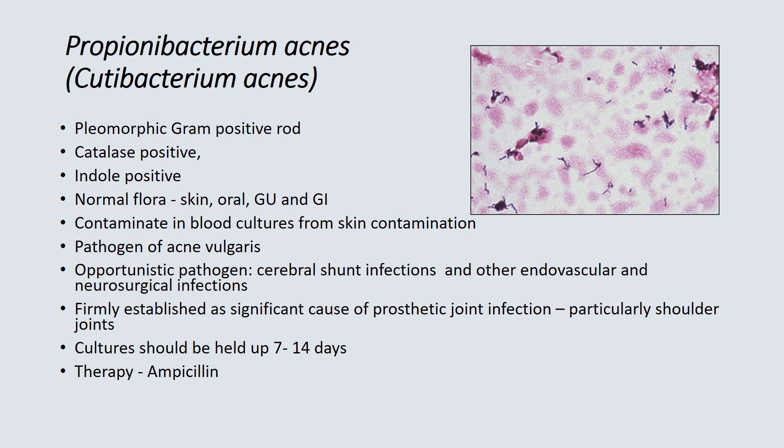Finally, Propionibacterium acnes, now renamed Cutibacterium acnes, is a pleomorphic gram-positive rod capable of small branches, catalase positive and indole positive. It is found as normal flora in the skin, oral, GU, and GI areas and is a contaminant in blood cultures from skin contamination. It is the pathogen of acne vulgaris. Over the last decade, it has become an emerging pathogen of cerebral shunt infections, endovascular and neurosurgical infections, and is a significant cause of prosthetic joint infections, particularly shoulder joints. Cultures should be held seven to fourteen days, and the therapy of choice is ampicillin.